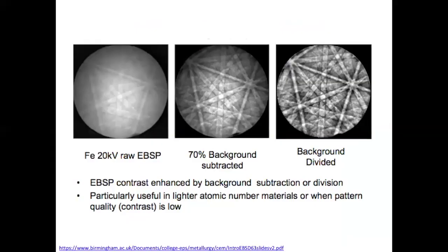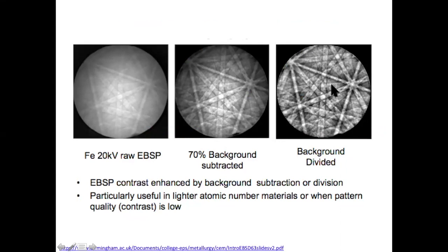This slide shows how computer image processing enhances contrast. In many cases the raw EBSP data is quite faint. By doing background subtraction and background division, these image processing techniques highlight the Kikuchi bands to make analysis much easier.